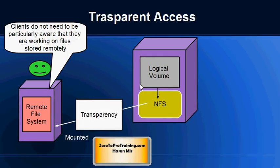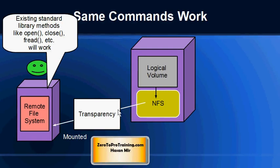The benefits that come out of network file system: number one, transparency. Clients do not need to be particularly aware that they are dealing with an external remote file system — they work with it as if it's part of their own machine. So due to the transparency, clients can use the same commands they were using for local files to open and write to the external files: open, close, fread, etc. The same commands will be used.